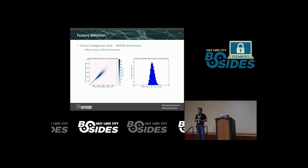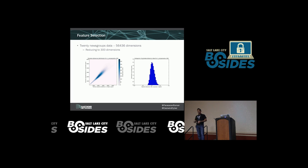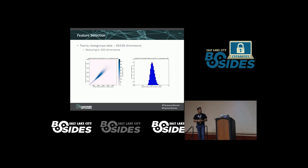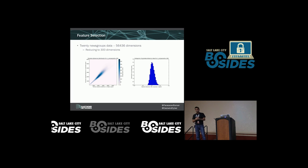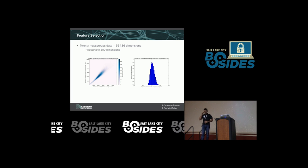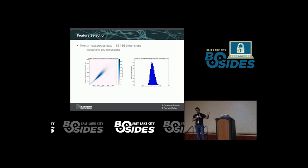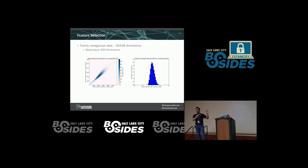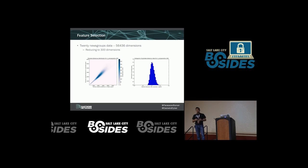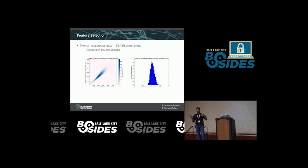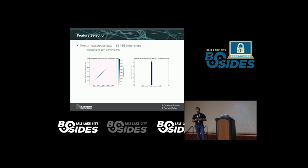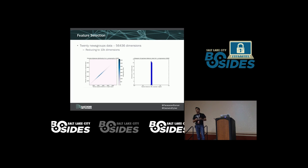One way to counter the curse of dimensionality is to be smart about picking your features. You have possibly thousands of features and you want to pick the ones that really matter. For example, with data from 20 news groups — a standard benchmark existing in 56,000-plus dimensions — if you reduce it to 300 dimensions, the chart shows the pairwise distance between points in the original and reduced space is pretty well preserved. You don't lose a lot of the shape of the data even at 300 dimensions.